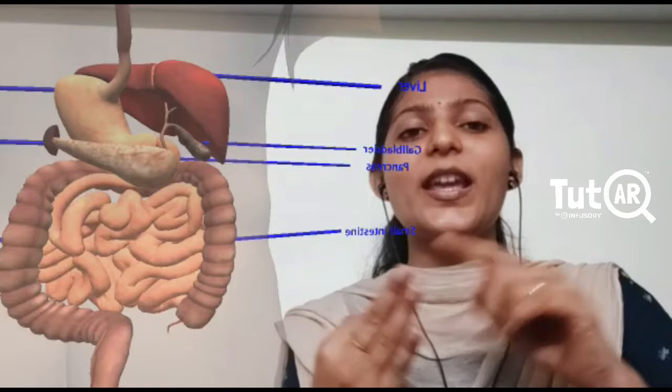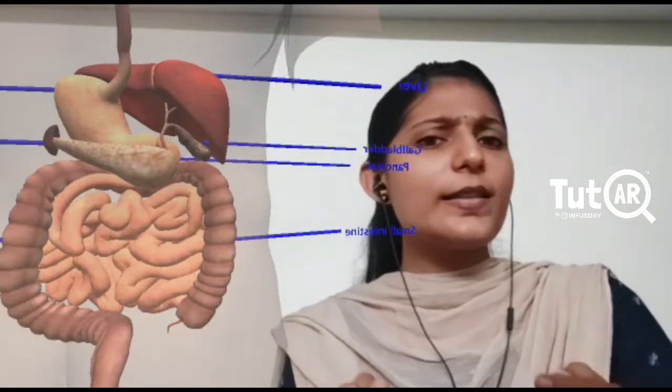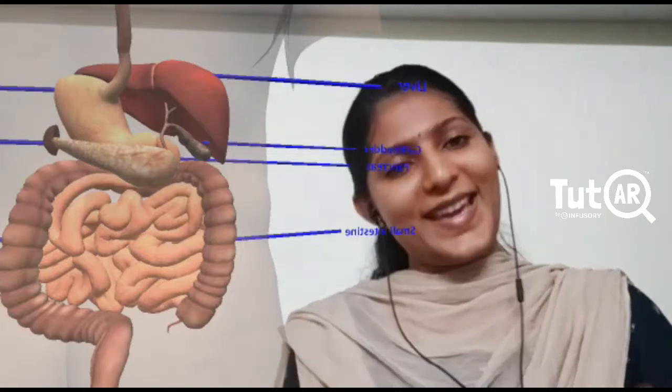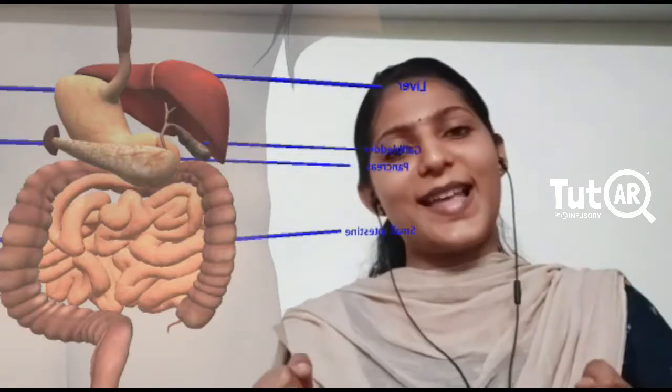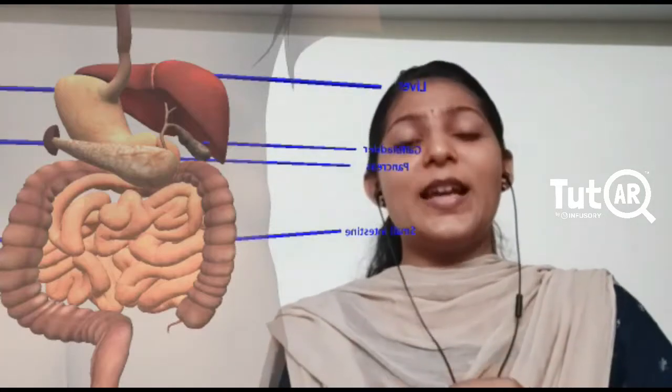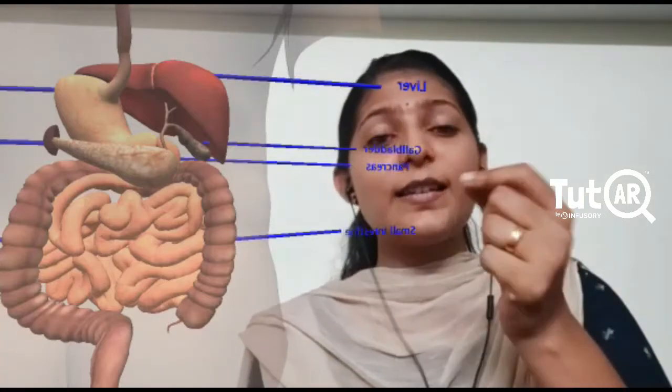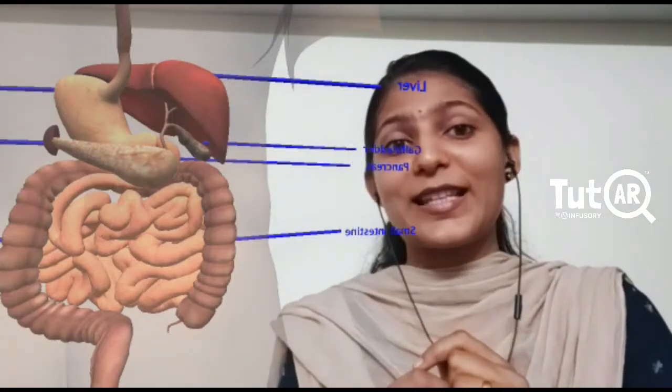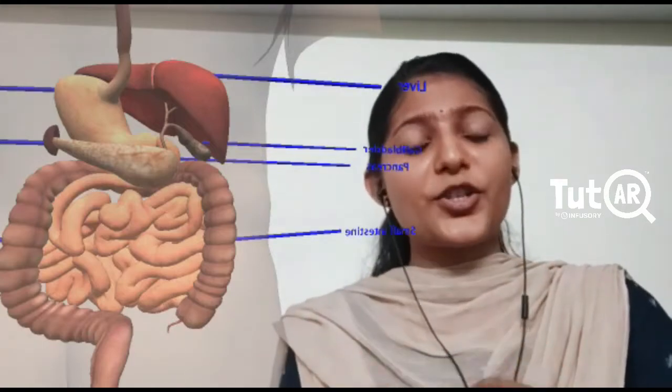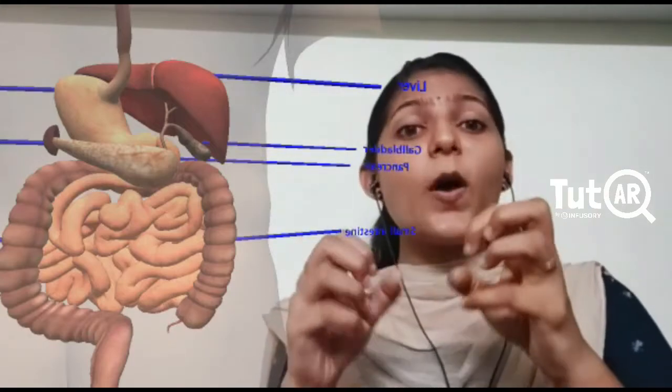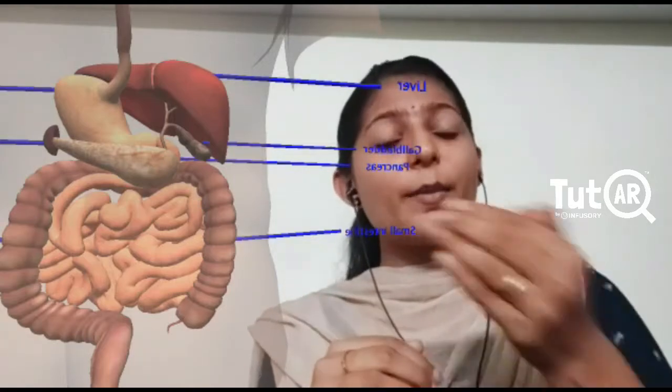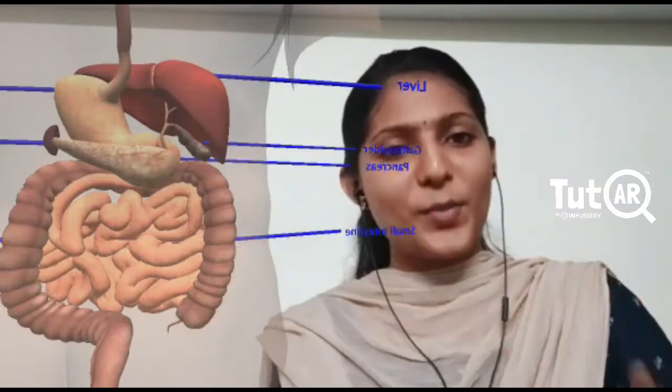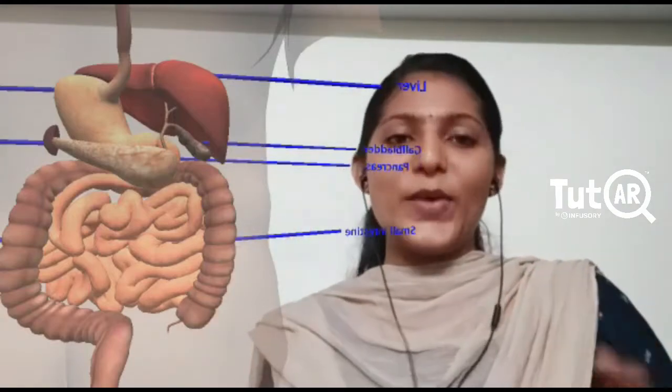So these three are the end products of digestion. Now where does this digested food go? Or how is this absorbed into the body? Yes, the small intestine acts as the site of absorption too. So the small intestine, the internal structure of the small intestine have got small finger-like projections called as villi. And it is the function of these villi to absorb these molecules and pass them on to the bloodstream so that it reaches the different cells of the body. And that's how we get energy.